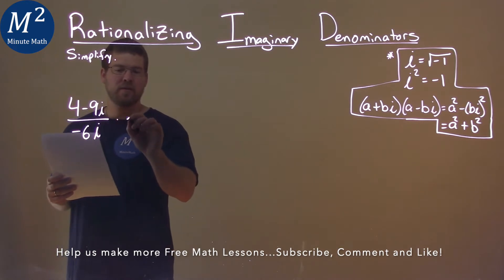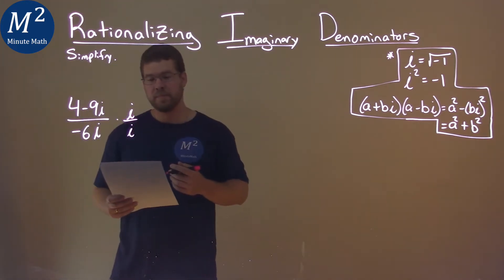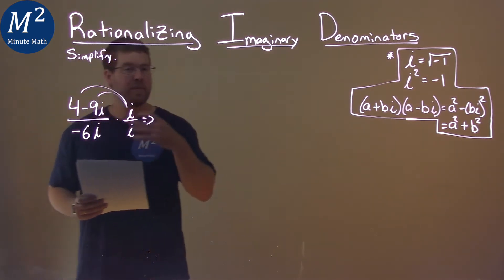First thing I want to do is multiply this by i over i. Essentially, 1. And in doing that, I can distribute, or I have to distribute the i when we multiply.